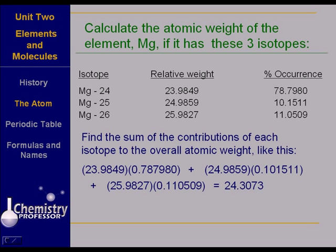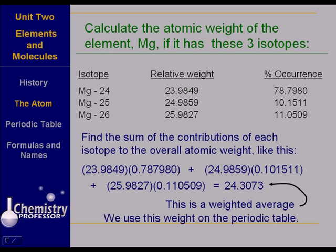This then is the average weight of the isotope of magnesium, and it is a weighted average. It involves both the weight of each isotope and its frequency of occurrence. It's a weighted average, and this is the weight that we use on the periodic table.